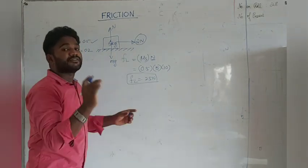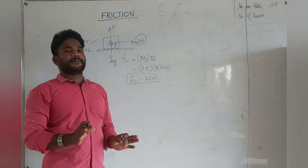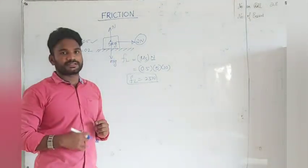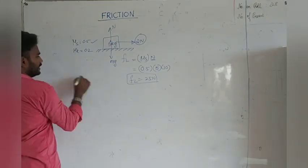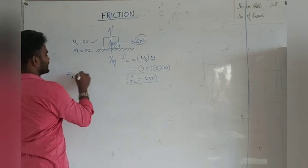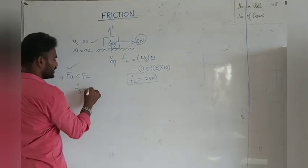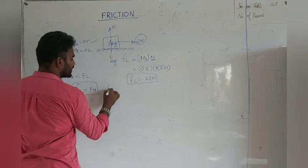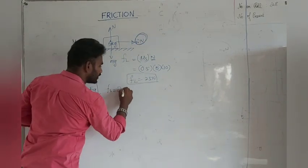Since the block is not moving, we use the static friction concept. Here FA (2 N) is less than FL (25 N). So static friction equals the applied force, which is 2 Newton. That is the answer.